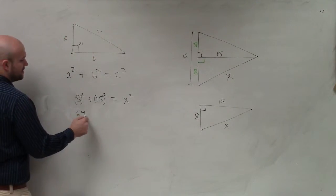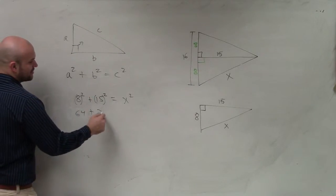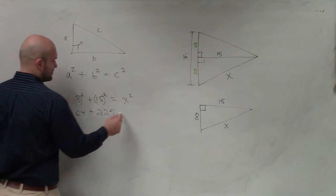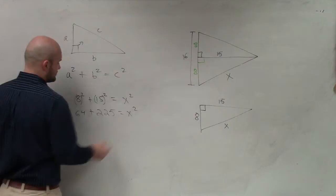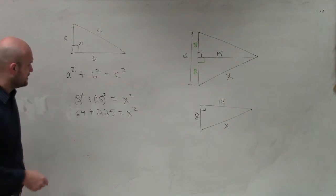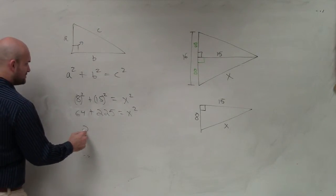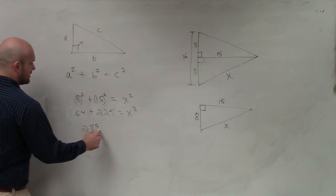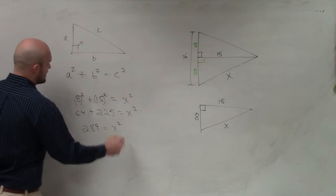All right. 8 squared is 64. 15 squared is 225 equals x squared. Then I add those up together, so I have 289 equals x squared.